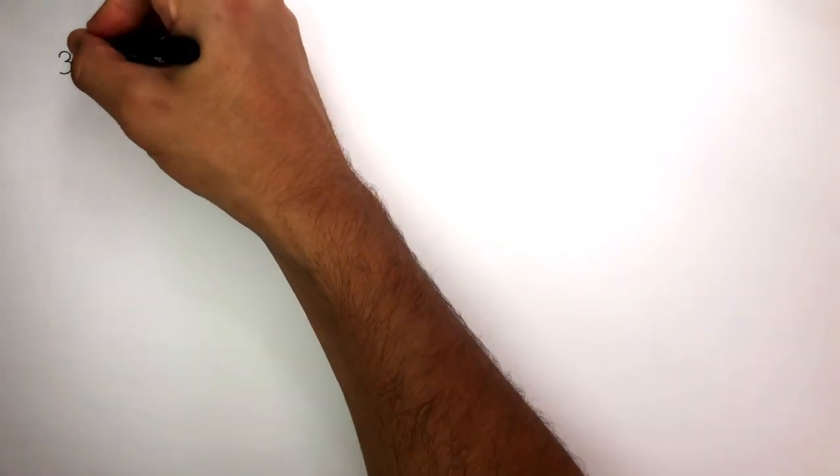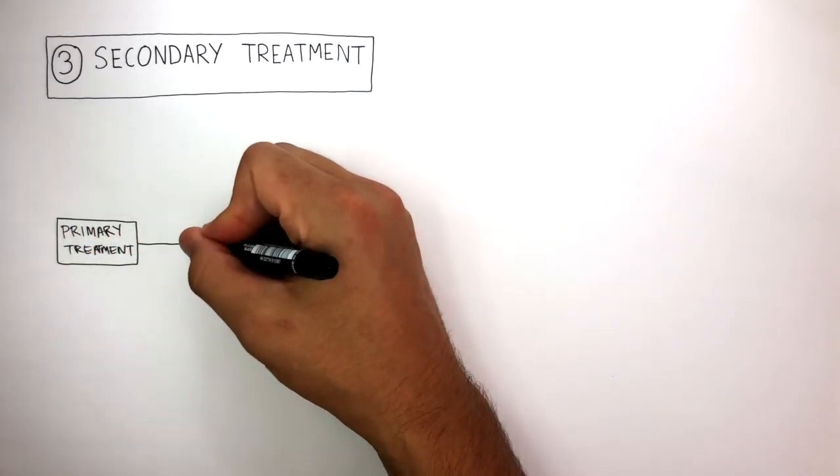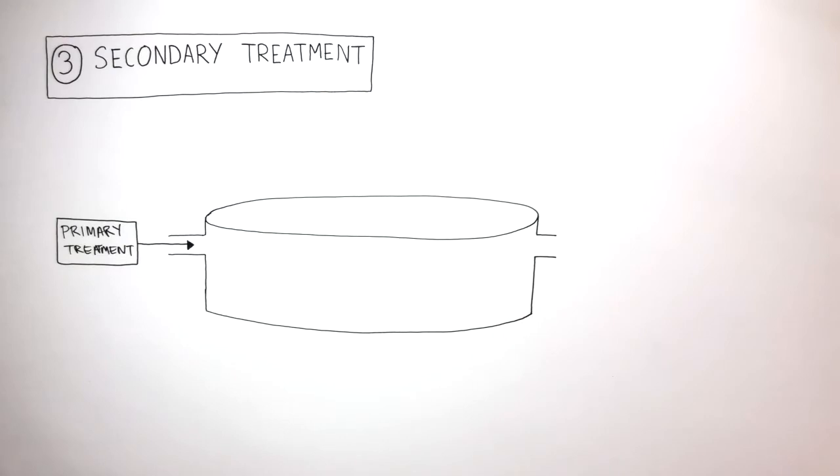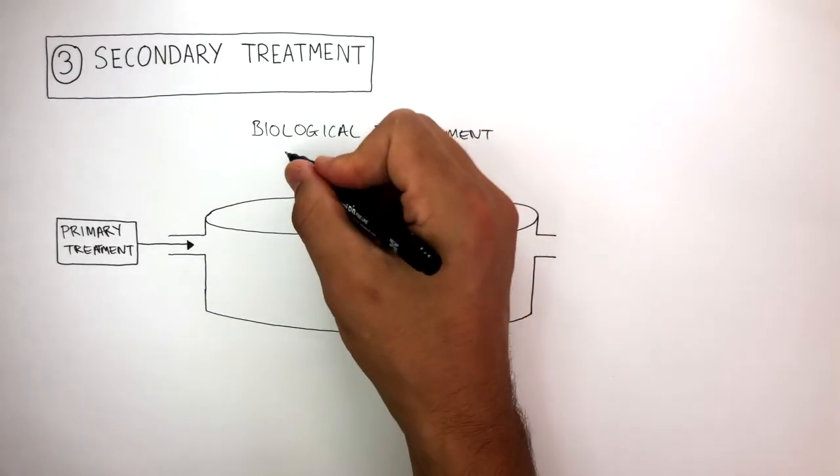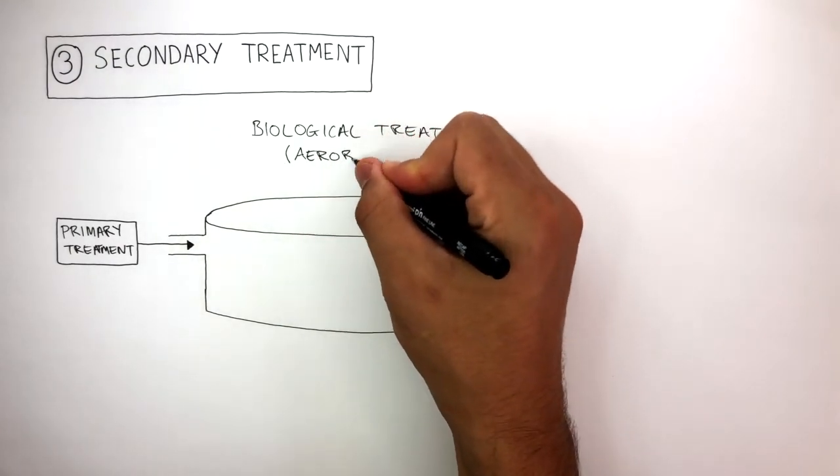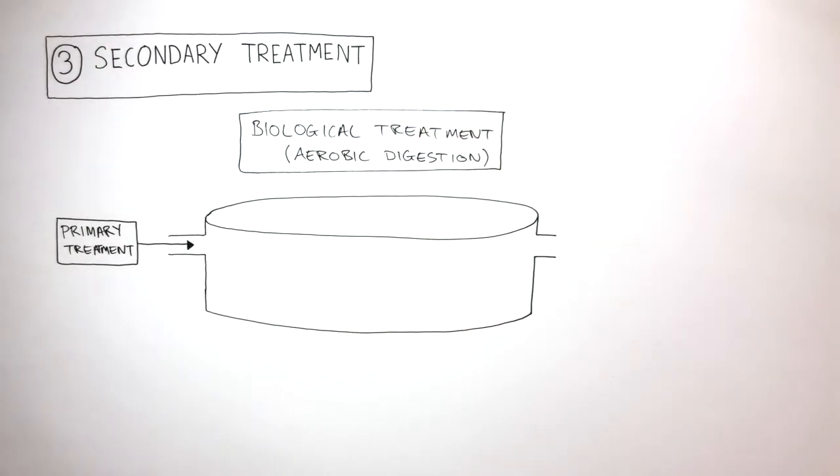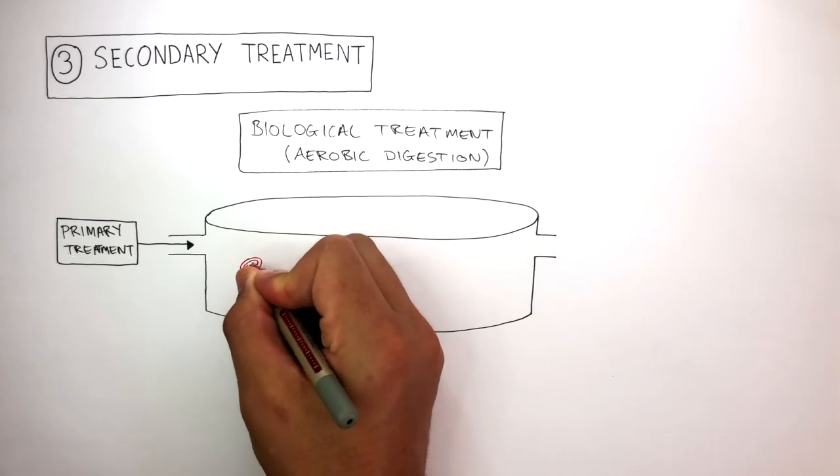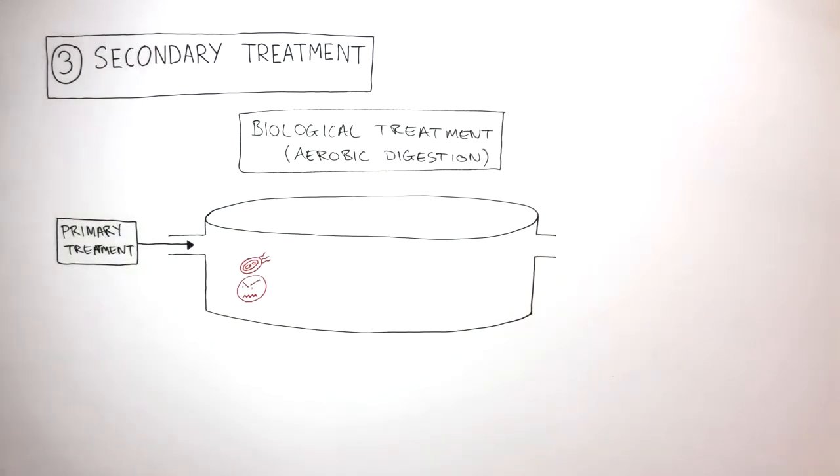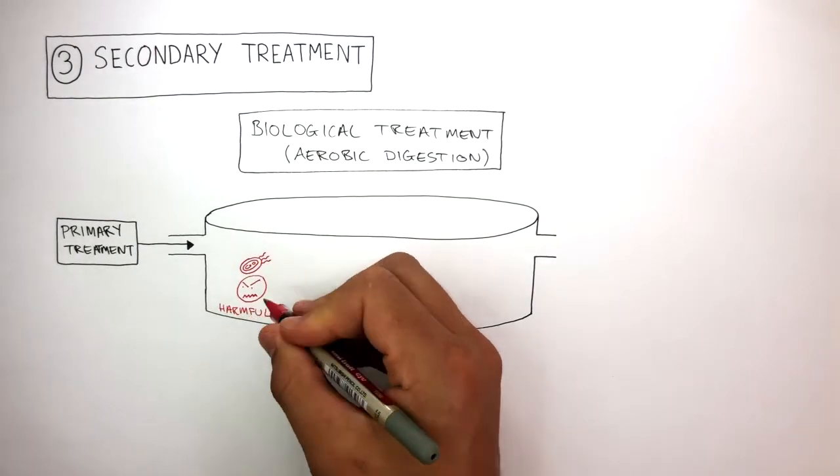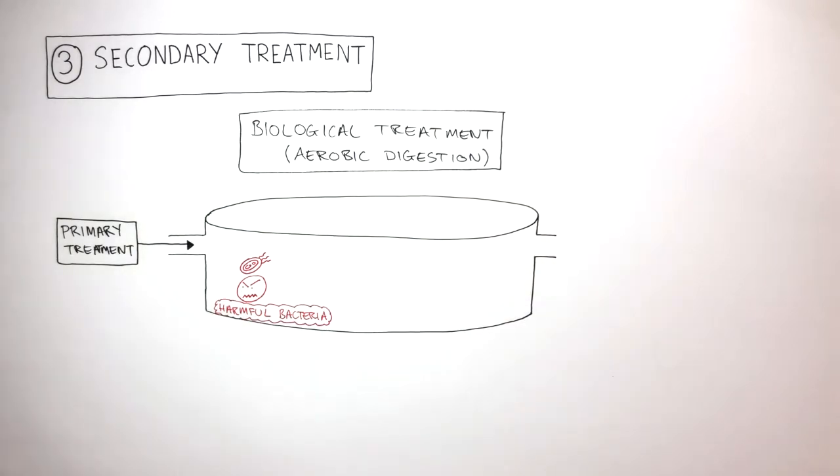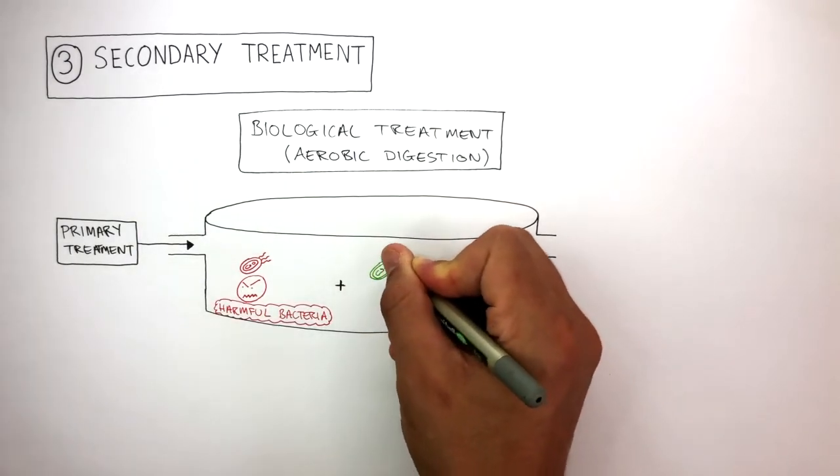The third step is secondary treatment. The effluent flows from primary treatment into this tank where biological treatment takes place, which involves the aerobic digestion of potentially harmful microorganisms in the effluent. To remove these harmful bacteria, we add useful bacteria.